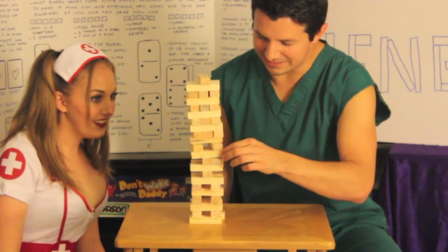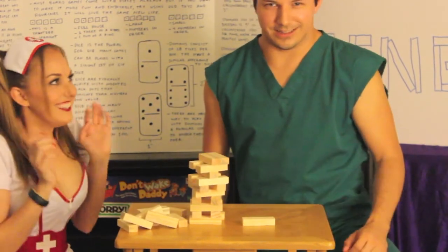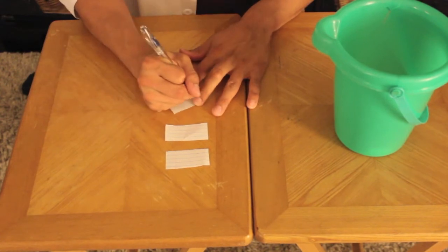The person who came in last or lost the game must draw randomly from the truth box and answer the question. If you run out of questions, simply have the group write more.